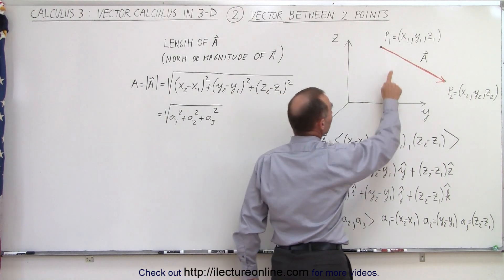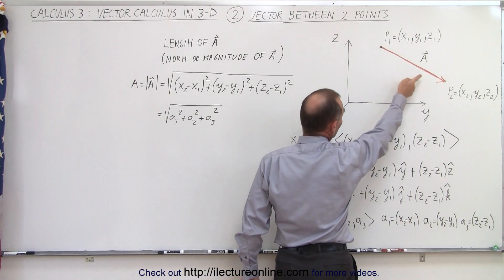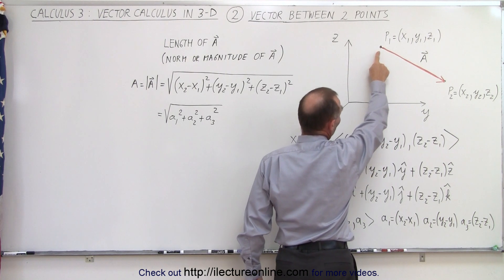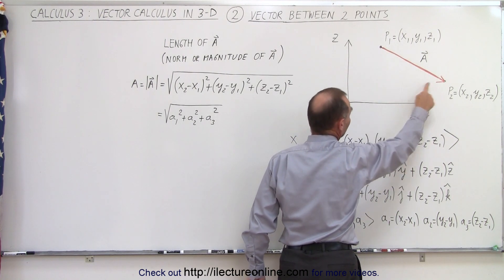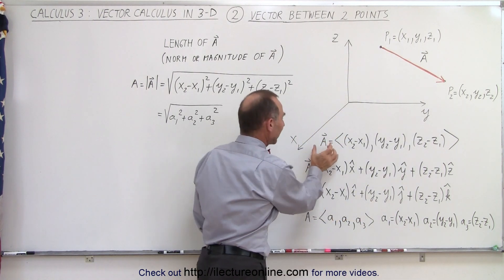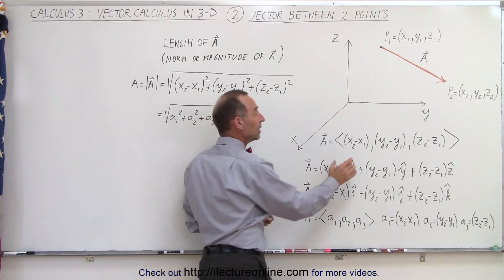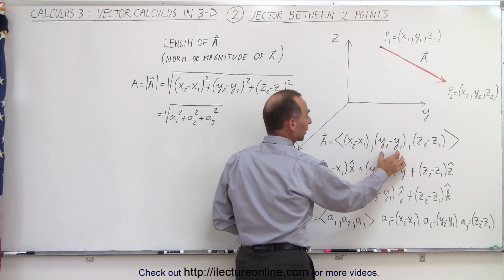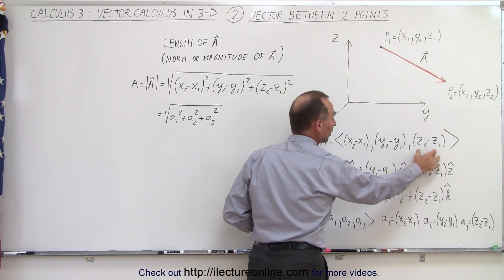And now we draw a line which represents a vector, or an arrow which represents a vector from point 1 to point 2. And there's our vector a. So our vector a can be defined as follows. It is equal to the magnitude of the x component, the magnitude of the y component, and the magnitude of the z component.